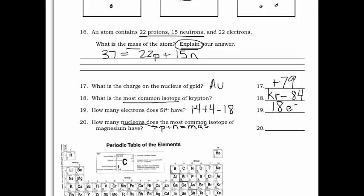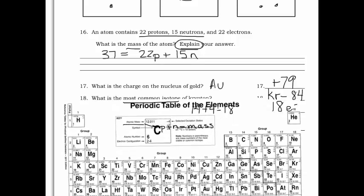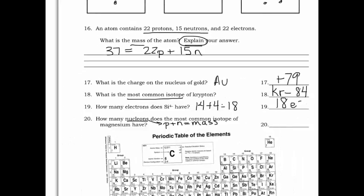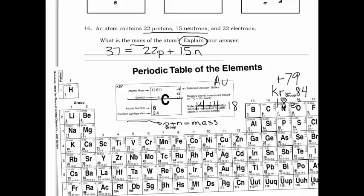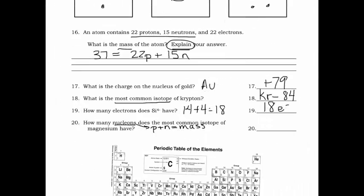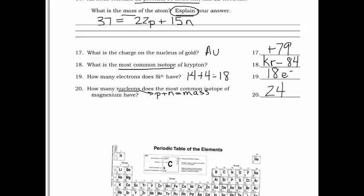Number 20: how many nucleons does the most common isotope of magnesium have? Nucleons are protons plus neutrons, which is essentially the mass number. So we're looking for the mass rounded to the nearest whole number — magnesium is right here and that's 24. When you study for this quiz, ask yourself variations: instead of nucleons, ask how many neutrons, or switch out the element. That's how you help yourself study — and that's actually how the quiz is made. Good luck on your second quiz!